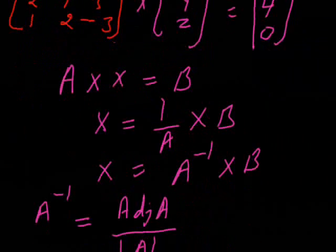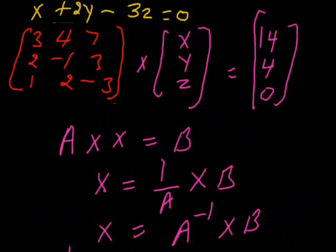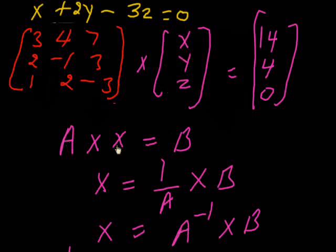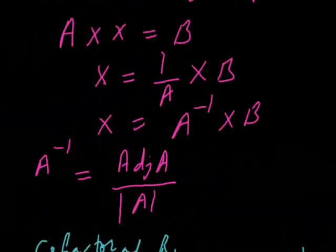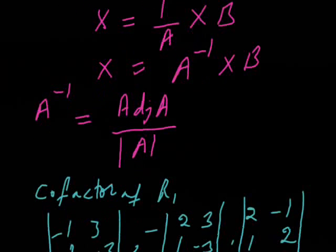Now we give names to these matrices. This coefficient matrix is A, this variable matrix is X, and this constant matrix is B. We will carry A to the right side. We will show X is equal to 1 divided by A into B, which can also be written as X = A⁻¹ × B. A to the power minus 1 is the inverse matrix.